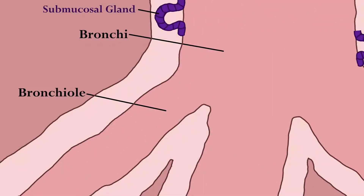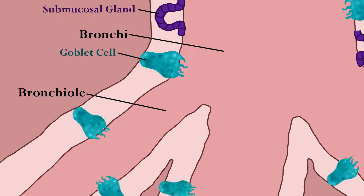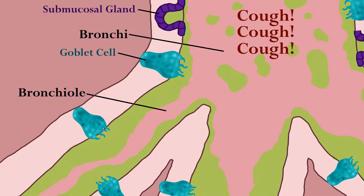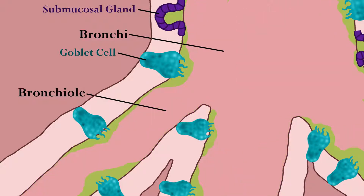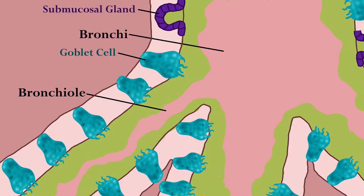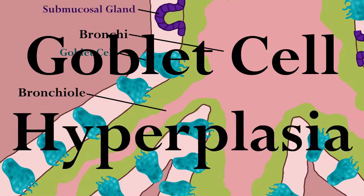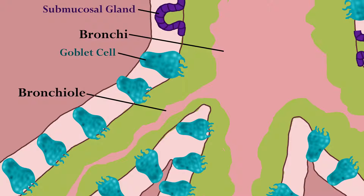Furthermore, submucosal glands, found in the lining of the bronchi, and goblet cells, found in the lining of bronchi and bronchioles, produce mucus. When the airway is irritated, both will produce mucus in an attempt to rid the airway of the irritant. Mucus in the larger airways can be easily expelled by coughing, but mucus in the small airways can easily cause a blockage. Moreover, as asthma persists, the airway can become remodeled, causing more and more goblet cells to be found there — known as goblet cell hyperplasia — which causes excess mucus to be produced, further blocking the airways.